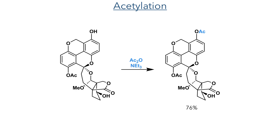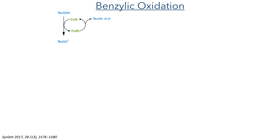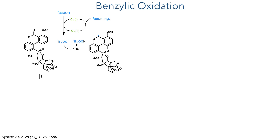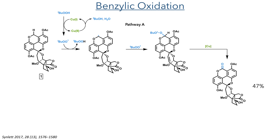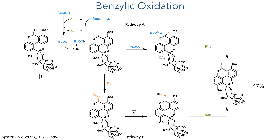With the bisacetal in place, the phenol was protected as an acetate in a 76% yield, and the molecule was then subjected to a benzylic oxidation. Tert-butyl hydrogen peroxide first reacts with copper(I) chloride, generating a peroxy radical that abstracts the hydrogen from the benzylic position, generating a radical stabilised by hyperconjugation with the aromatic ring. There are two possible pathways: another equivalent of the tert-butyl peroxide radical can attack to generate a peroxyacetal that is oxidised to the ester by the copper salt, or the molecule reacts with atmospheric oxygen and the resulting peroxy radical is similarly oxidised by the copper salt. The target product is formed in a 47% yield.